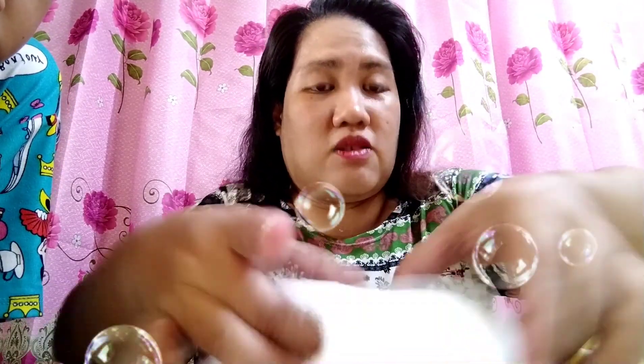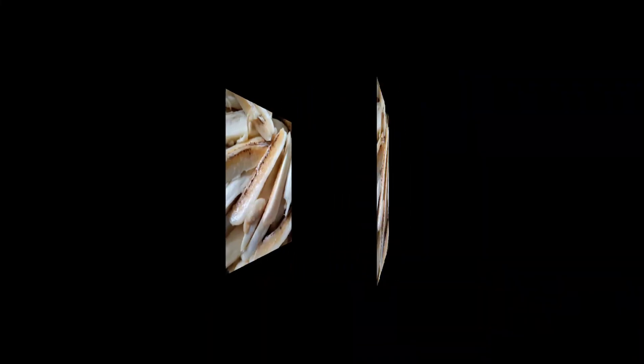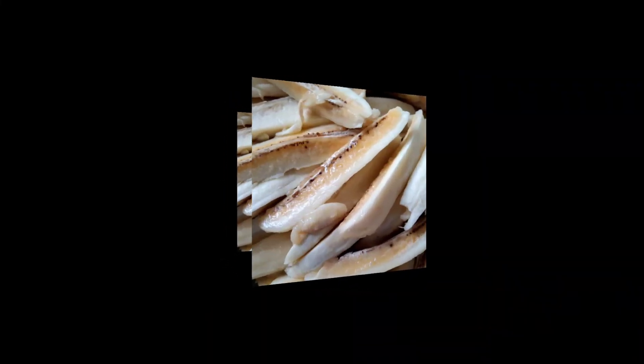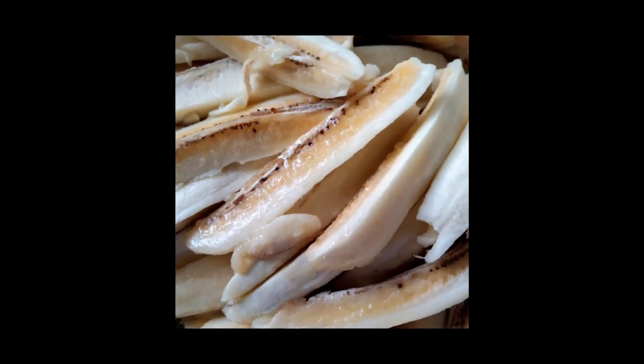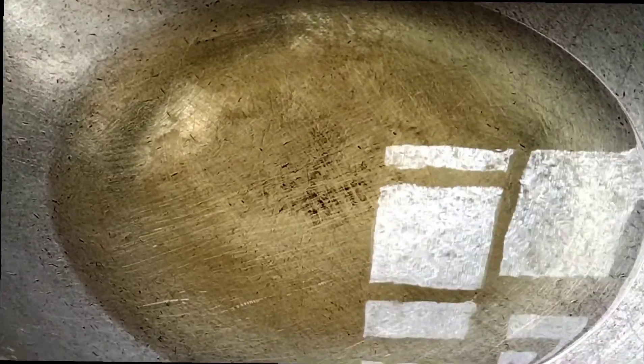Ngayon, giyatin yung saba — yan, ito na siya. Ngayon magpapainit tayo ng mantika, tapos ipifryad natin siya. Pag malapit na siya, ilalagay ko rin yung sugar. Okay guys, nagpapainit na tayo ng mantika. Pag mainit na yung mantika, saka natin ipitrito yung saging.